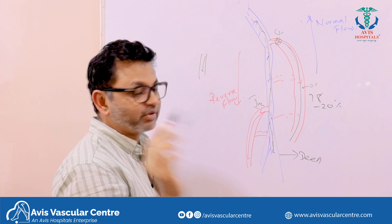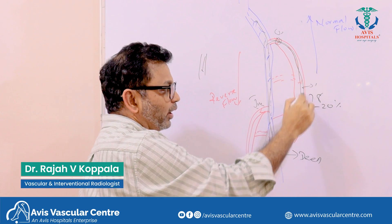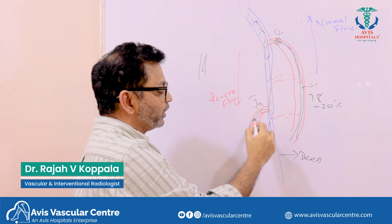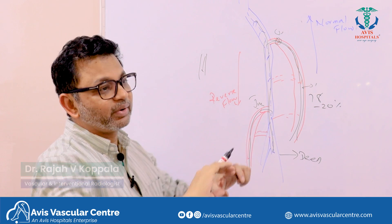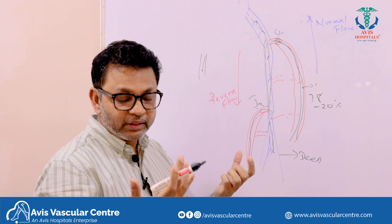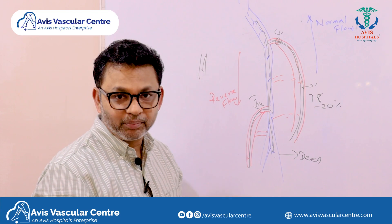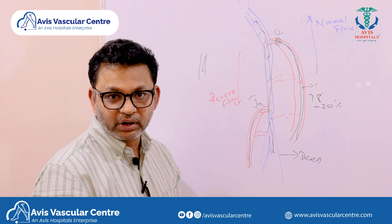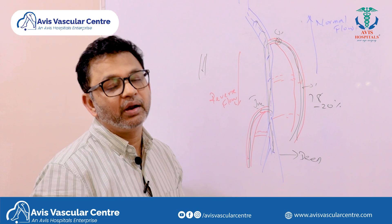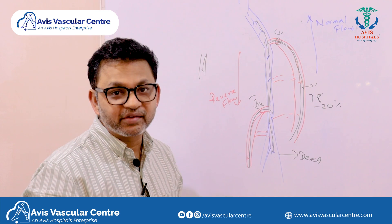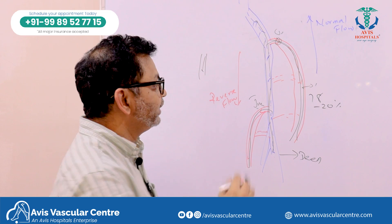When the valve becomes defective, instead of going up, the blood starts going down. Once the blood starts going down at both these junctions, it starts accumulating in the legs. These veins swell up and become bluish, and in later stages greenish or reddish in color. The whole leg starts discoloring, and in later stages ulcers may develop.